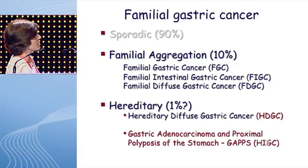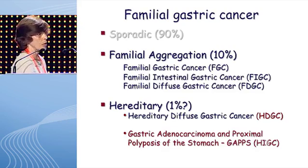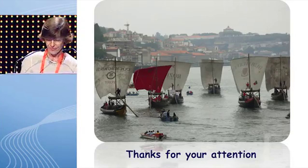As a summary regarding familial gastric cancer: if criteria for hereditary cancer are not met, you are facing familial aggregation — about 10% of cases. In the hereditary setting, we already knew of the diffuse type (HDGC), and now we also have a gastric adenocarcinoma with glandular structure constituting the hereditary intestinal type of gastric cancer. Thank you so much for your attention.